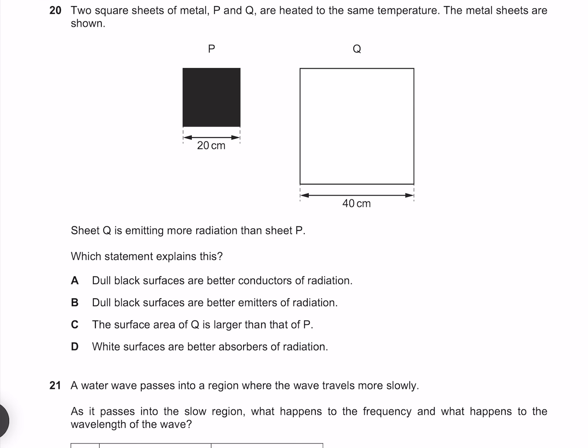Two square sheets of metal P and Q are heated to the same temperature. The metal sheets are shown. Sheet Q is emitting more radiation than sheet P. Which statement explains this? Dull black surfaces are better conductors of radiation is rubbish. Dull black surfaces are better emitters of radiation is also not the case. The surface area of Q is larger than that of P is both the case and a reasonable explanation for this effect. White surfaces are better absorbers of radiation, which is simply not the case. Our answer is therefore C.